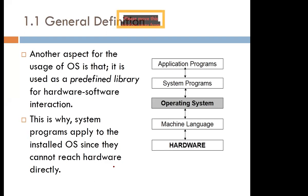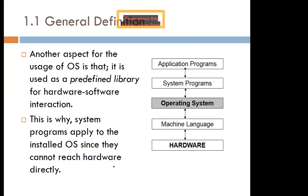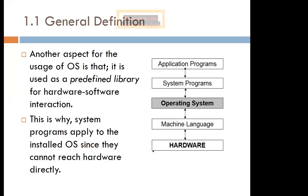The operating system works by using predefined libraries for hardware and software interaction. You have to install the operating system on your machine first, then any other predefined library will be installed and the operating system will use it to communicate with the different devices.